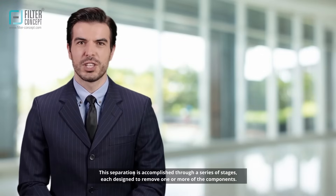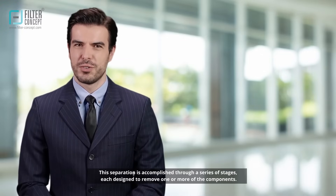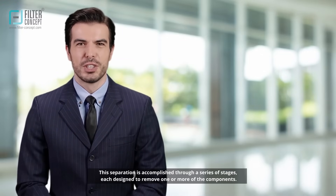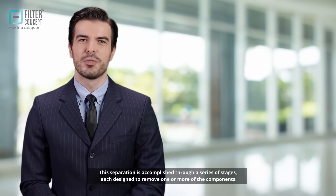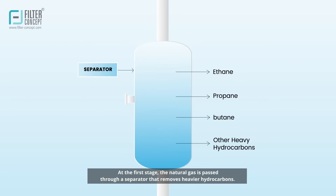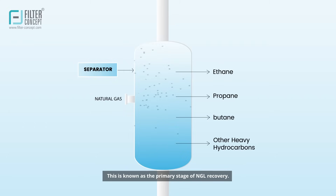This separation is accomplished through a series of stages, each designed to remove one or more of the components. At the first stage, the natural gas is passed through a separator that removes heavier hydrocarbons. This is known as the primary stage of NGL recovery.